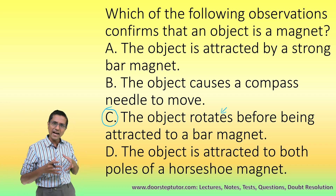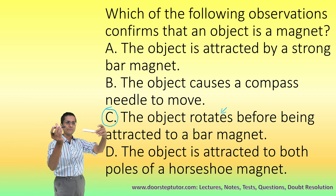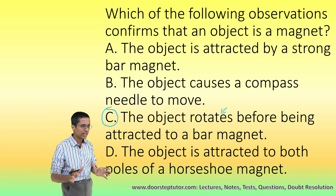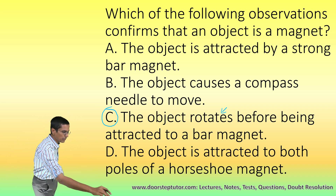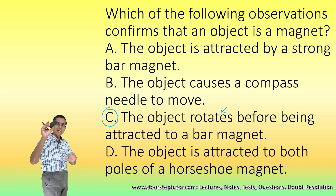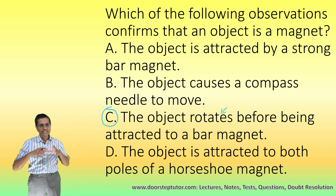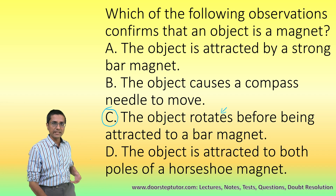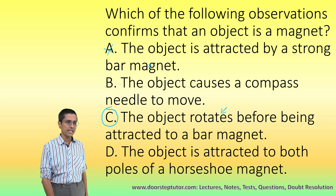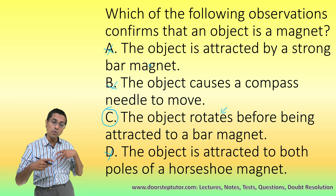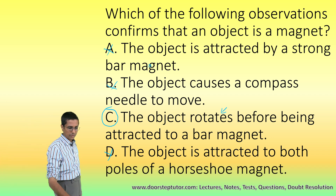If this object was a simple iron nail, it would not rotate — it would simply get attracted. The rotation tells us that the object is not a nail but a magnet, and it has a preferred orientation. All the other choices A and B would also hold true if the object were an iron nail.